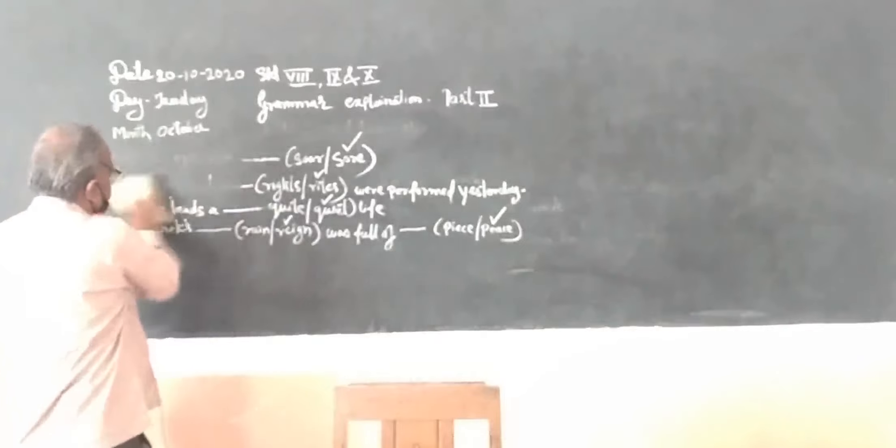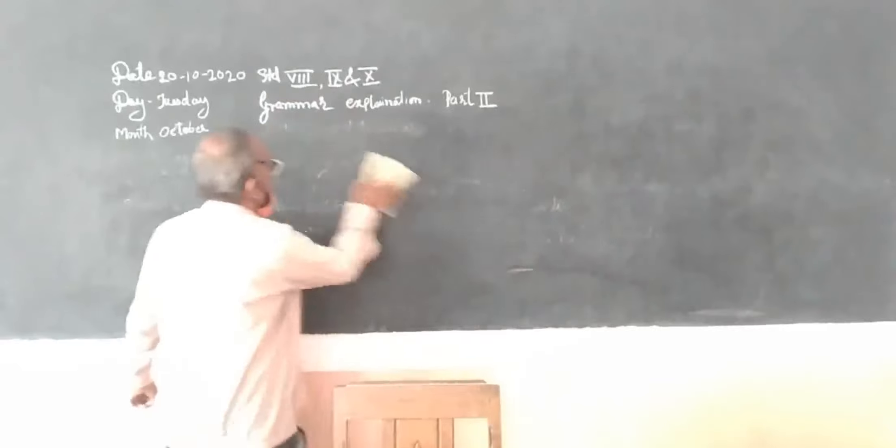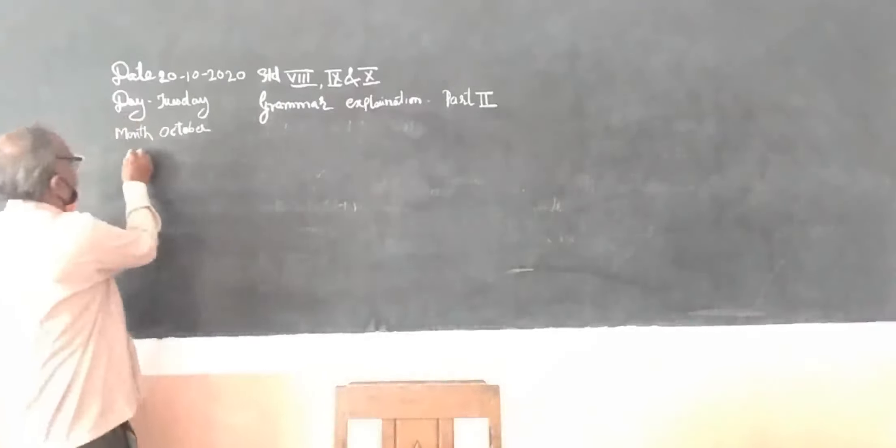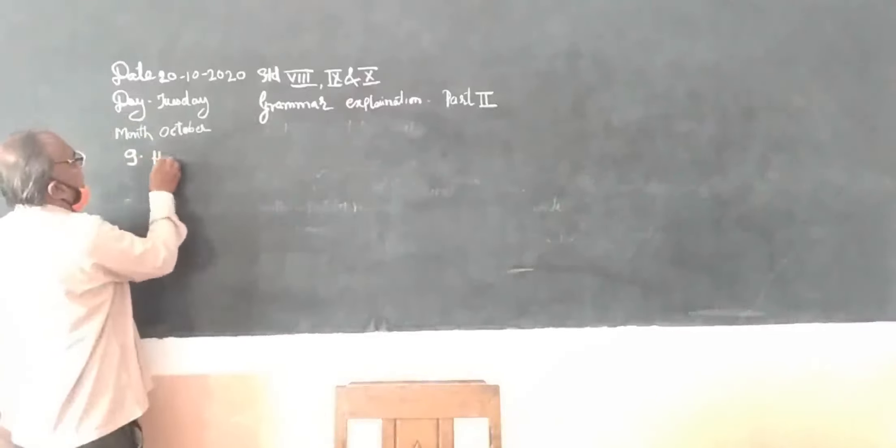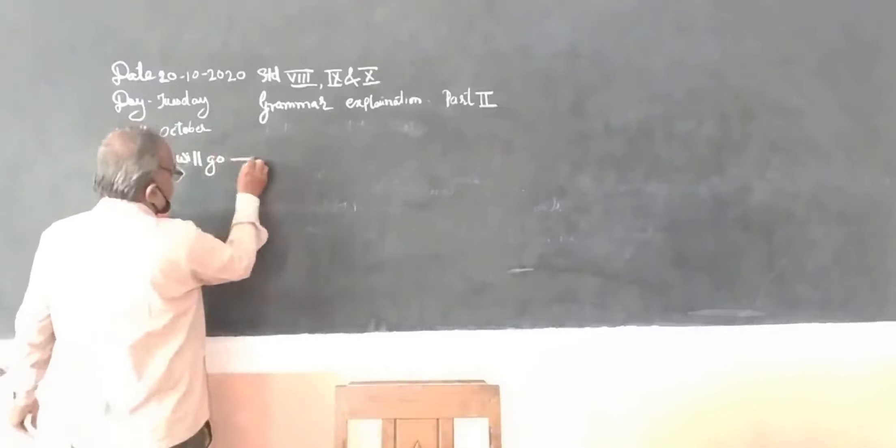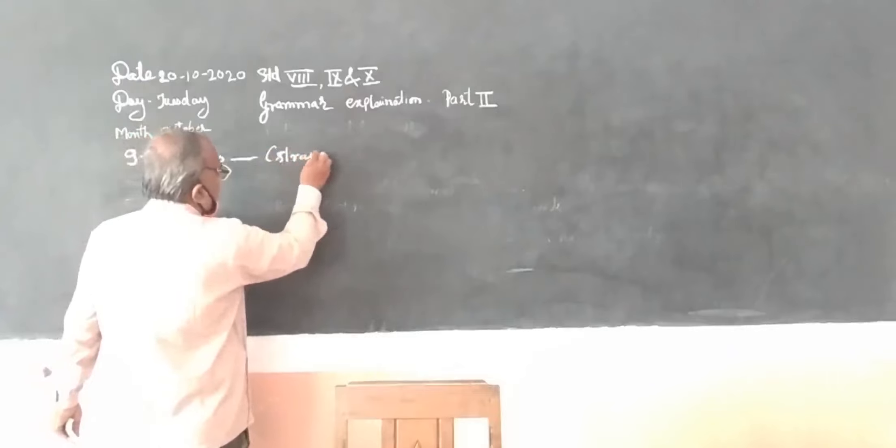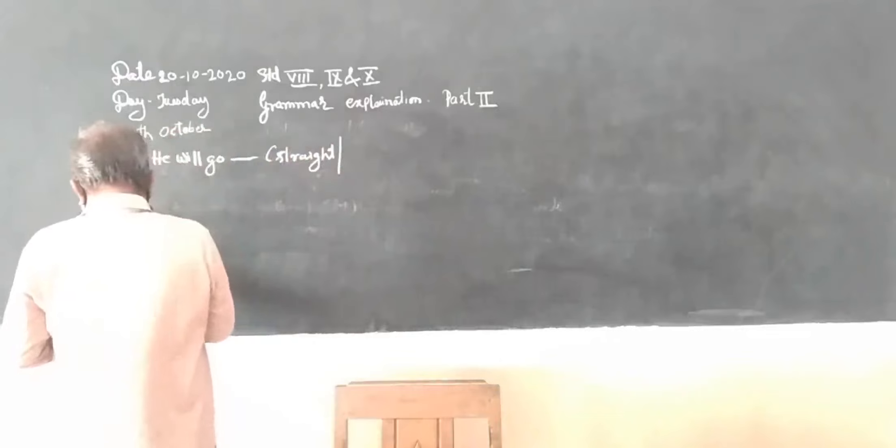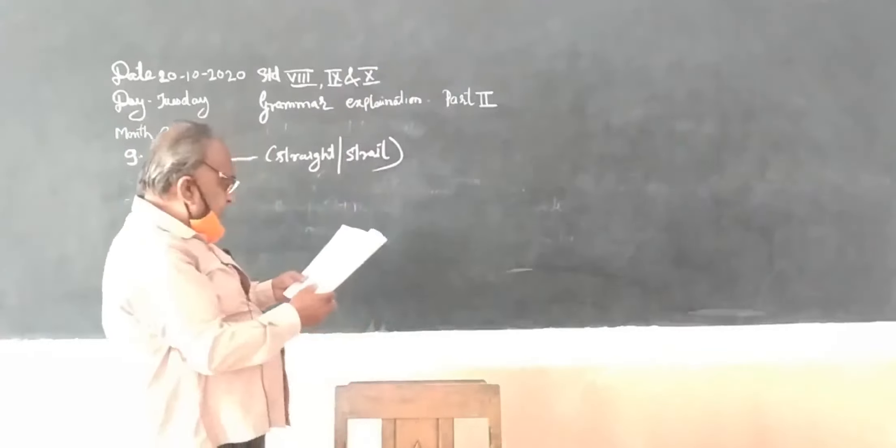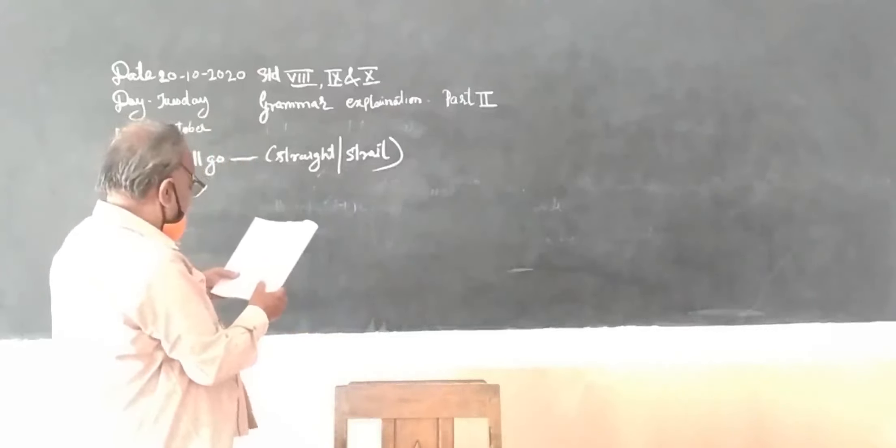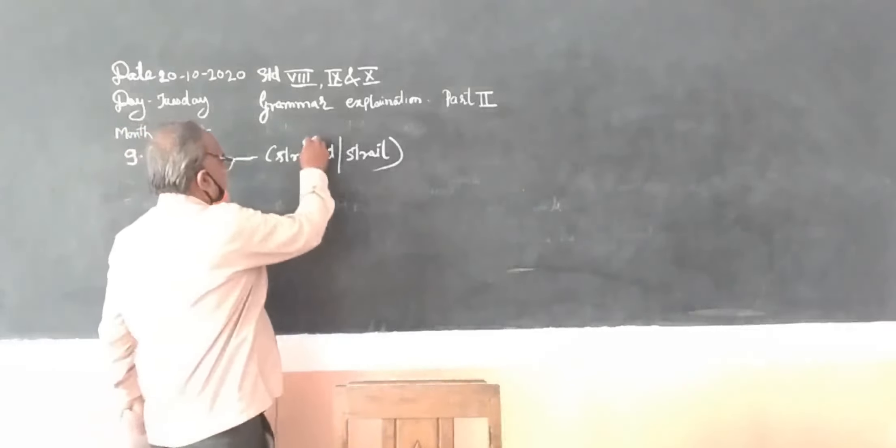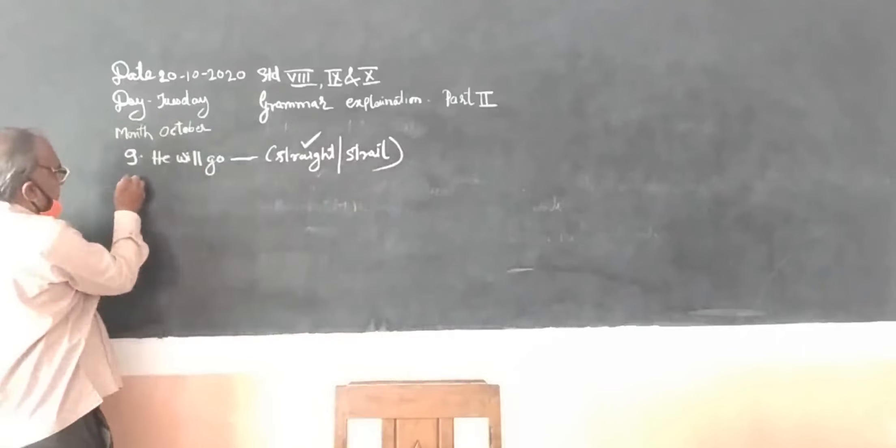Next, ninth one: he will go S-T-R-A-I-G-H-T straight oblique S-T-R-A-I-T strait. He will go straight when straight, then which straight you have to use? This strait we have to use.